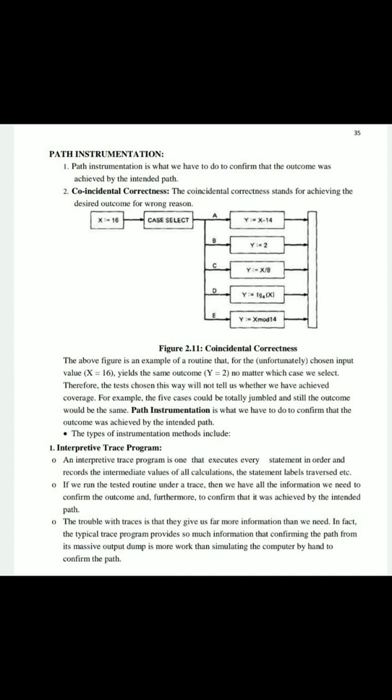The first type is the Interpretive Trace Program. An interpretive trace program is one that executes every statement in order and records the intermediate values of all calculations. For example, for a plus b into c, the program first finds the value of a plus b, then multiplies by c. So intermediate values are stored — a plus b value is stored, then the c value. For example, 2 plus 2 equals 4, then 4 into 2 equals 8.